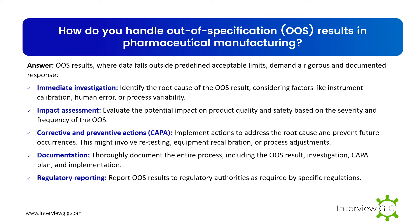How do you handle out-of-specification (OOS) results in pharmaceutical manufacturing? OOS results, where data falls outside predefined acceptable limits, demand a rigorous and documented response. Immediate investigation identifies the root cause of the OOS result, considering factors like instrument calibration, human error, or process variability. Impact assessment evaluates the potential impact on product quality and safety based on the severity and frequency of the OOS. Corrective and preventive actions (CAPA) are implemented to address the root cause and prevent future occurrences, which might involve retesting, equipment recalibration, or process adjustments. The entire process is thoroughly documented, and OOS results are reported to regulatory authorities as required.